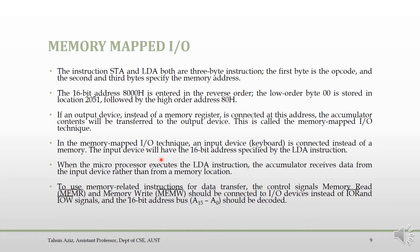In memory mapped I/O, we use a 16-bit address for both input and output devices. A specific memory address is assigned to the I/O device — that memory location is dedicated to the I/O device. We use memory-related instructions to communicate with these devices, and we connect the data bus accordingly.